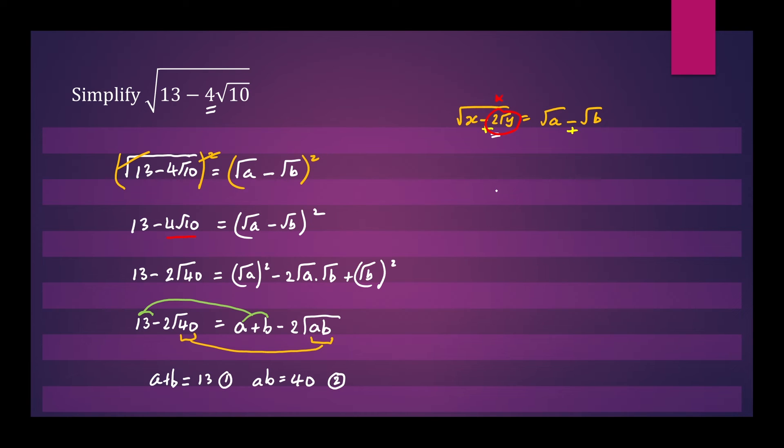Let's write our equations again. a plus b equals 13 equation 1 and a times b will equal 40 equation 2. So we want to know what two numbers when we add we get 13 and when we multiply them we get 40.